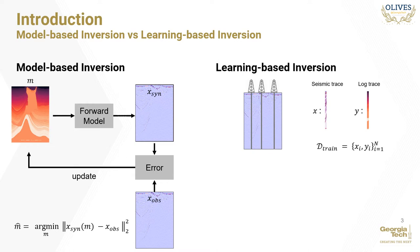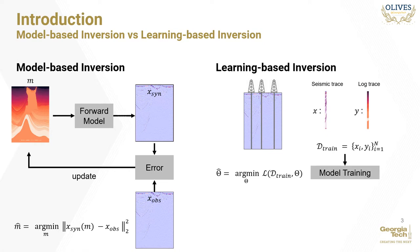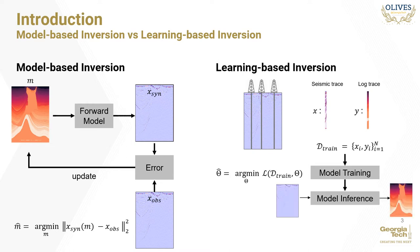In contrast, learning-based inversion works by extracting the well traces and the corresponding seismic traces at all well positions in the seismic survey. The seismic traces form the features while the well logs form the labels for the learning algorithm. The collection of all such seismic well log pairs constitutes our training dataset. The dataset is then used to train the machine learning algorithm by minimizing a loss function over the model's parameters theta over several training epochs. Once trained, the model is used to estimate a well log trace for each seismic trace in the section, resulting in a rock property section.